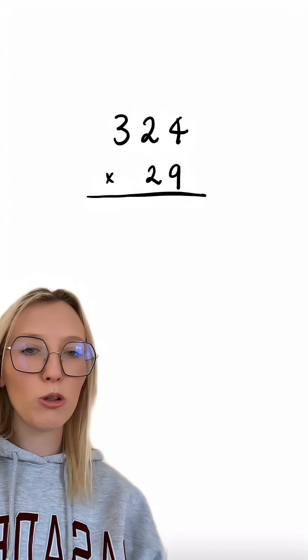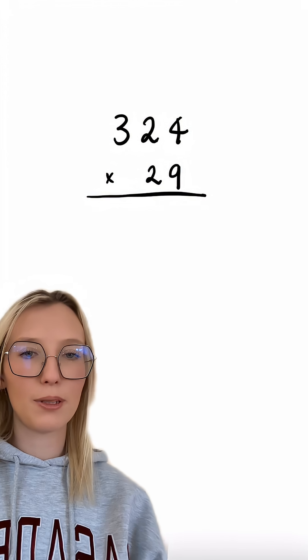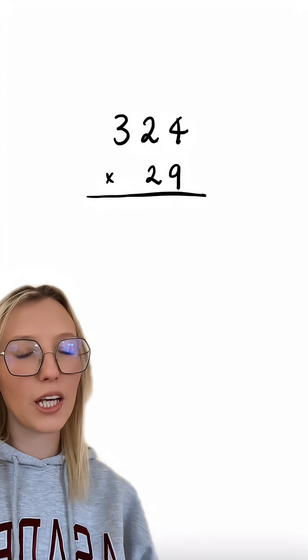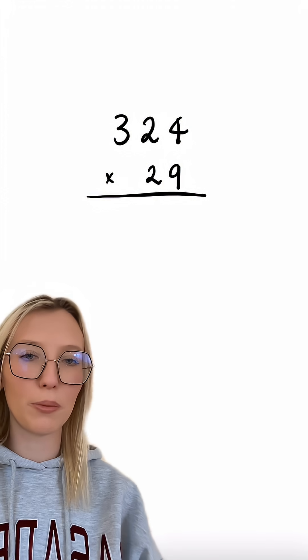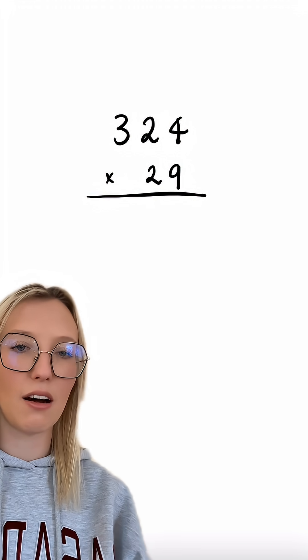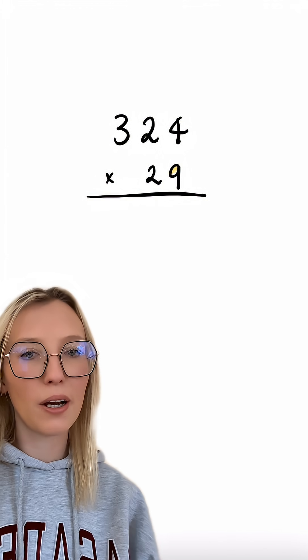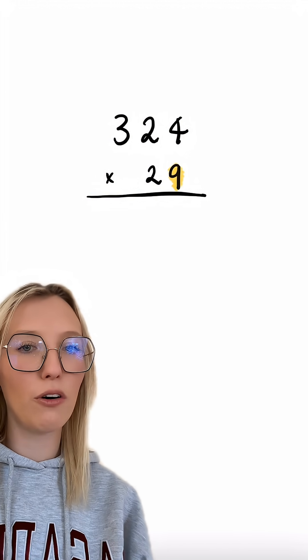So let's take a look at how we can do long multiplication in a few simple steps. The first step is we want to look at the last digit of the number on the bottom. In this case it's a 9 and we're going to go ahead and multiply the 9 by each of the digits on the number on top.